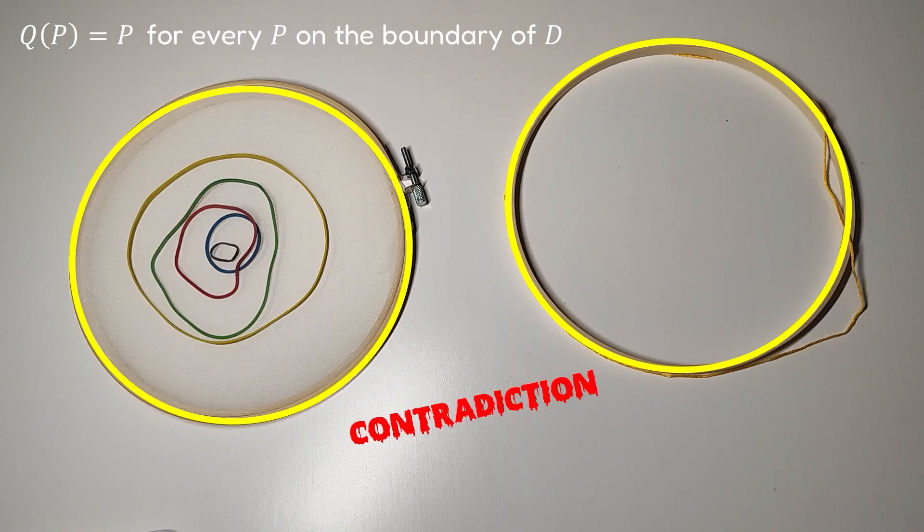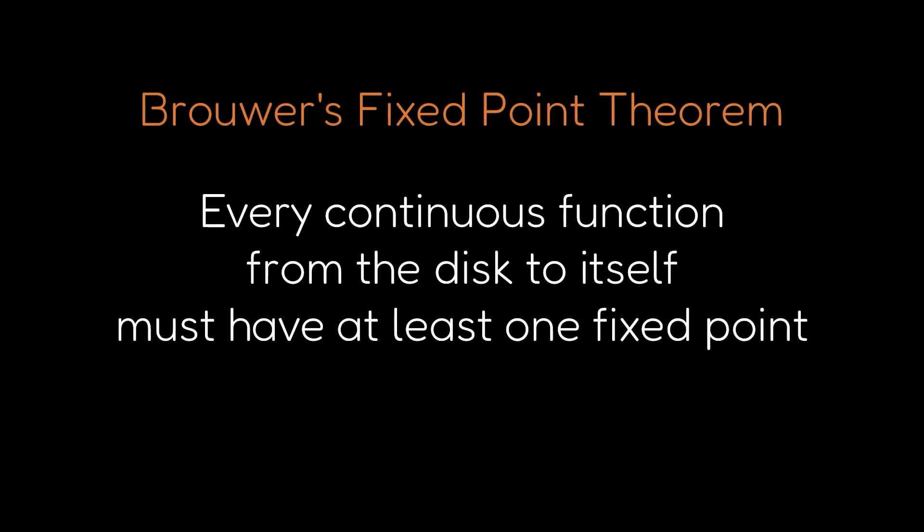It arises precisely from assuming that F had no fixed points. Therefore, every continuous function from the disk to itself must have at least one fixed point.